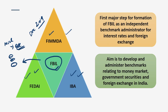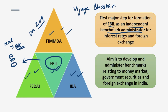Regarding the background of FBIL, the Reserve Bank of India set up a Committee on Financial Benchmarks in June 2013 to review existing systems governing major financial benchmarks in India. That committee was headed by Vijay Bhaskar, the then Executive Director of RBI, who made wide-ranging recommendations to reform benchmark administration. These were accepted by RBI in early 2014, and it was suggested that these associations jointly or independently form a separate entity to administer benchmarks, leading to FBIL's formation in December 2014.